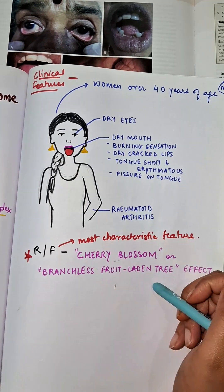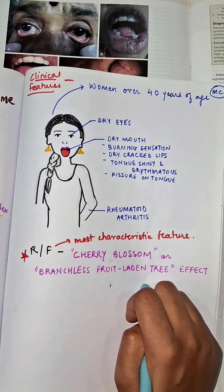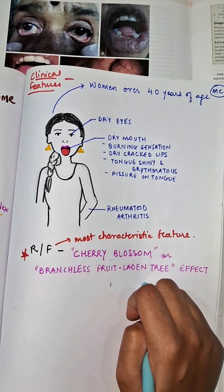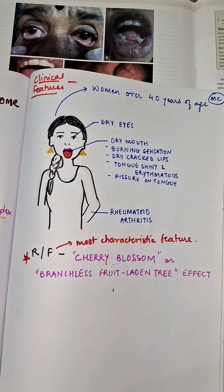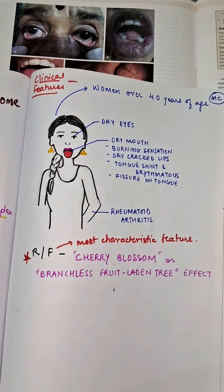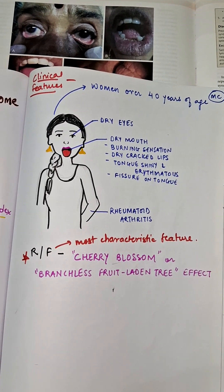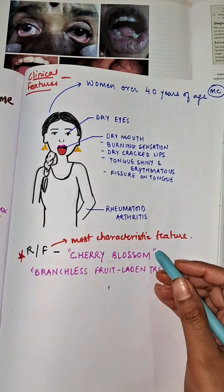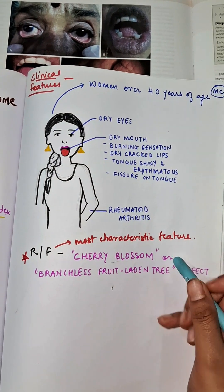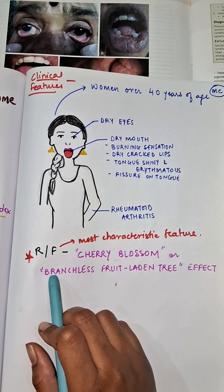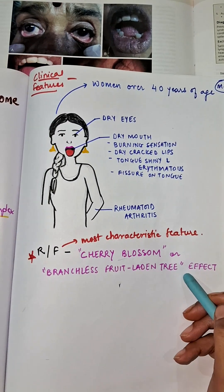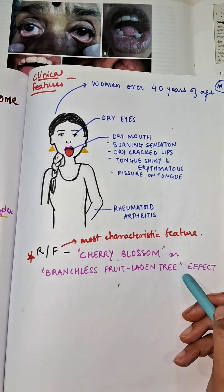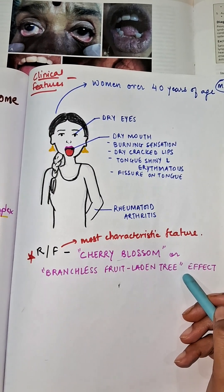Something important to remember is the radiographic feature seen on the sialograph of the salivary gland, which is the cherry blossom appearance or the branchless fruit-laden tree effect, seen radiographically.